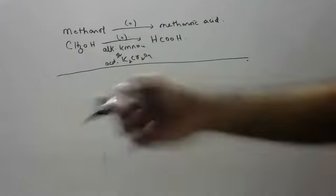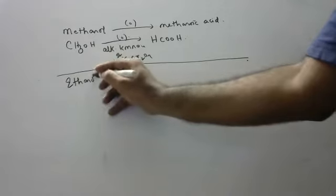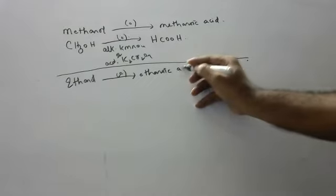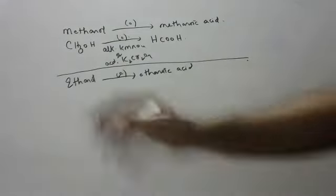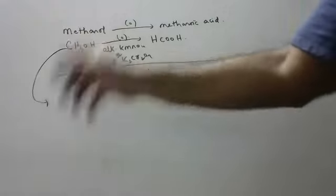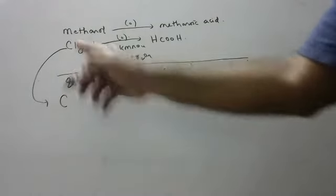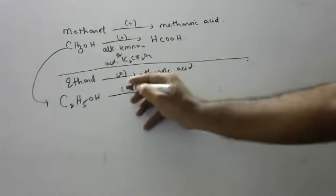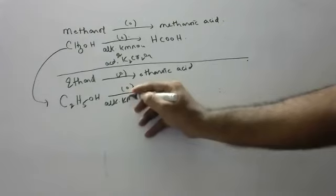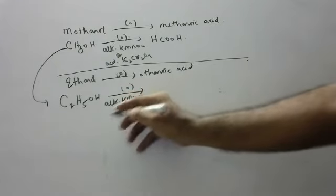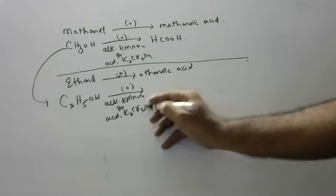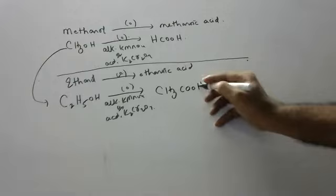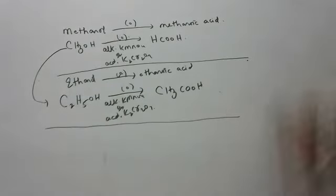Next one — this is there in your textbook. Ethanol on oxidation gives ethanoic acid. What is the formula of ethanol? Methanol is CH3OH, so ethanol is C2H5OH. On oxidation in the presence of alkaline KMnO4 or acidified potassium dichromate K2Cr2O7, it gives ethanoic acid.